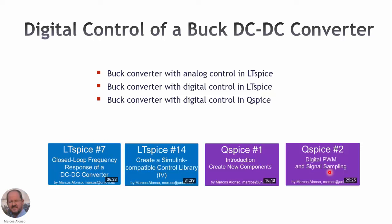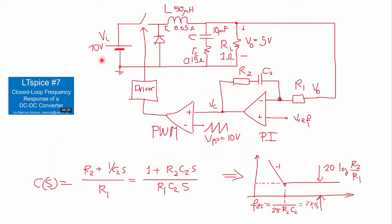For example, how to measure the output voltage and get its sampling when we want to regulate the output voltage of our converter. This is the buck converter we are going to use as an example, with all the elements and their values. We are measuring the output voltage and using a PI compensator, sending the compensator output to the PWM generator and then to the switch. This is the frequency response and Bode diagram of the PI compensator.